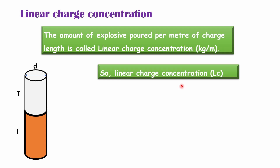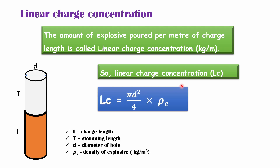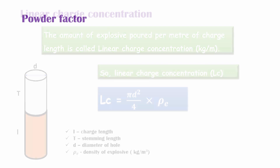Mathematically, the linear charge concentration LC can be calculated using the diameter of the explosives. Since drill holes are drilled in a circular shape, the area will be π·d²/4. If we multiply this by ρe, the density of the explosives, it gives us the linear charge concentration directly.